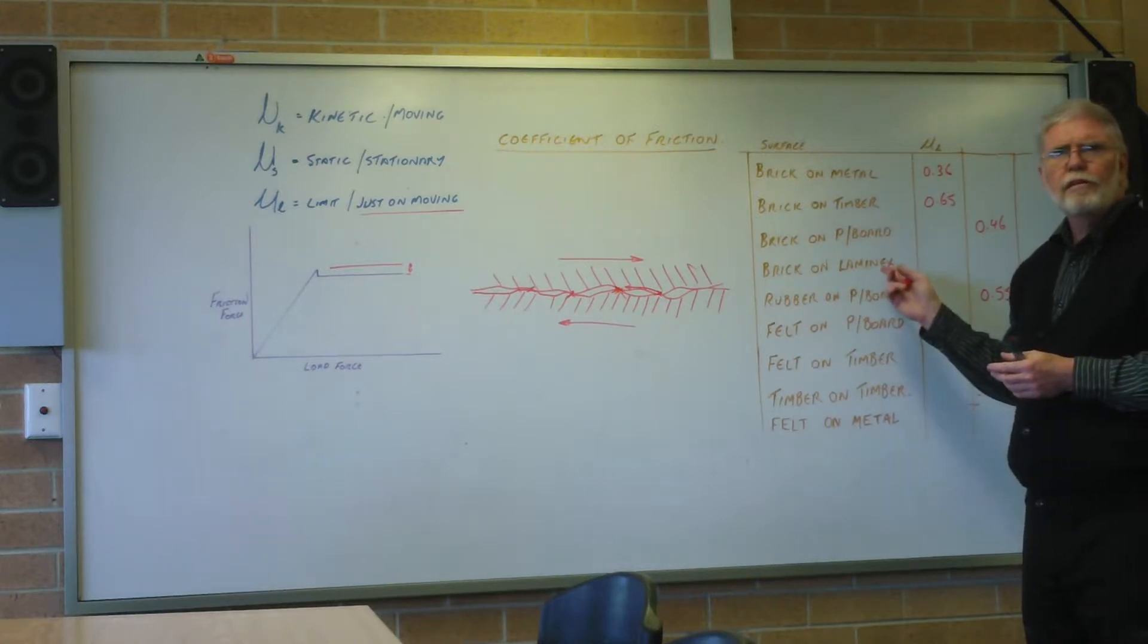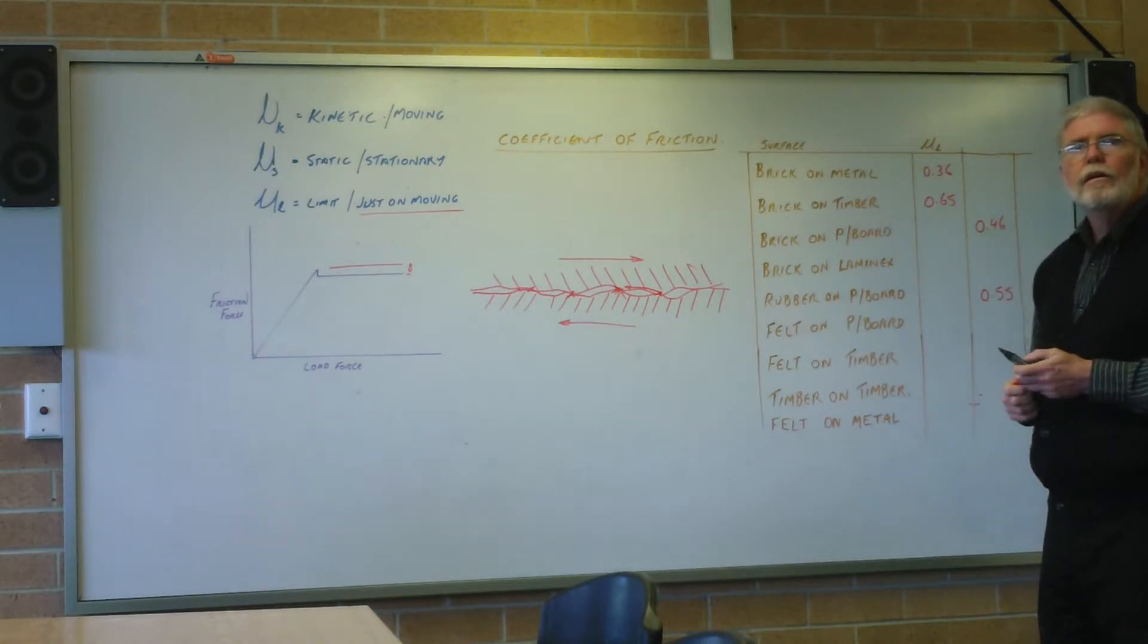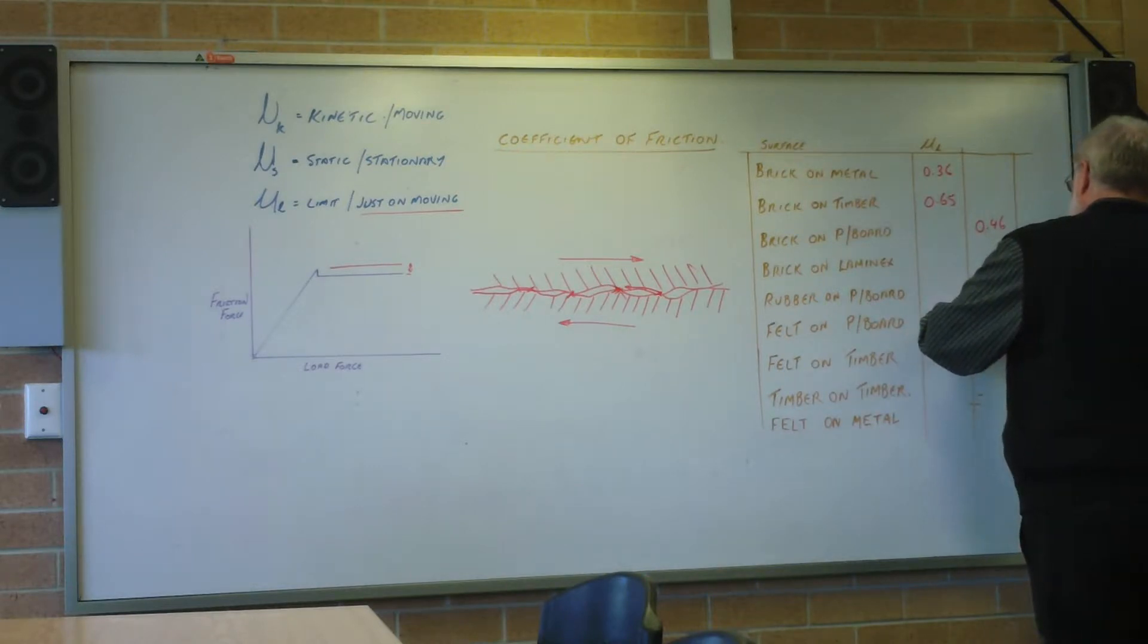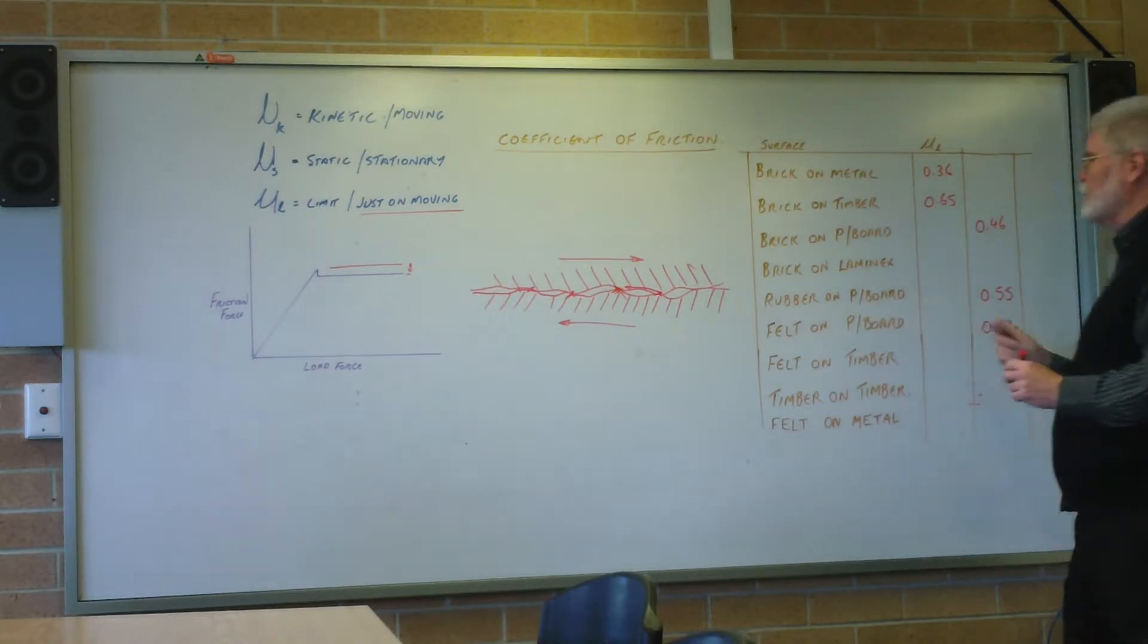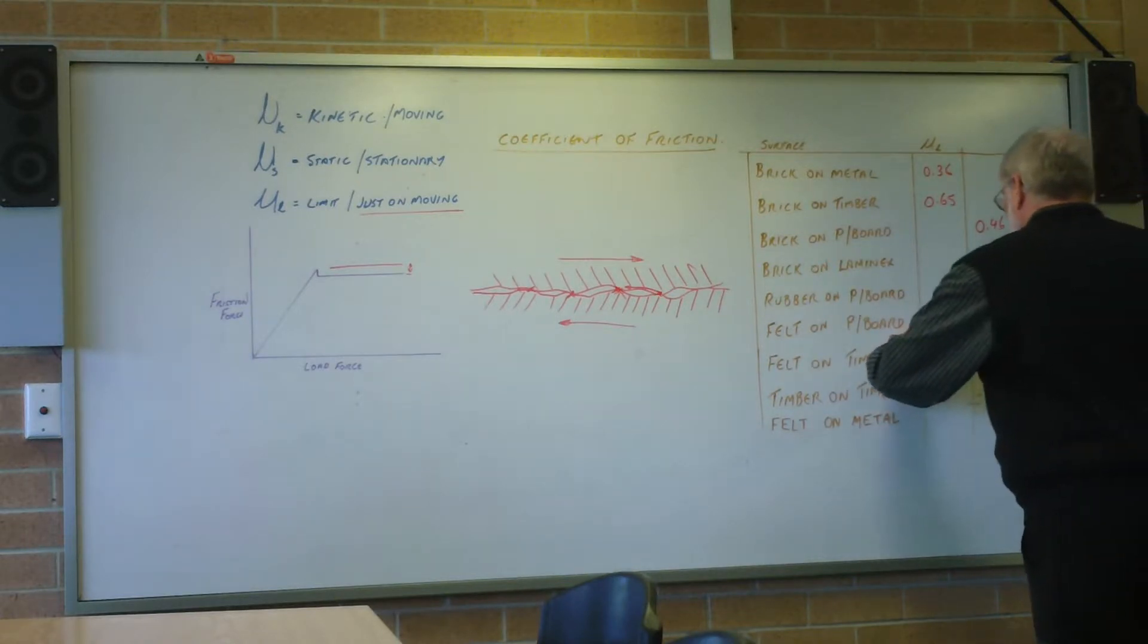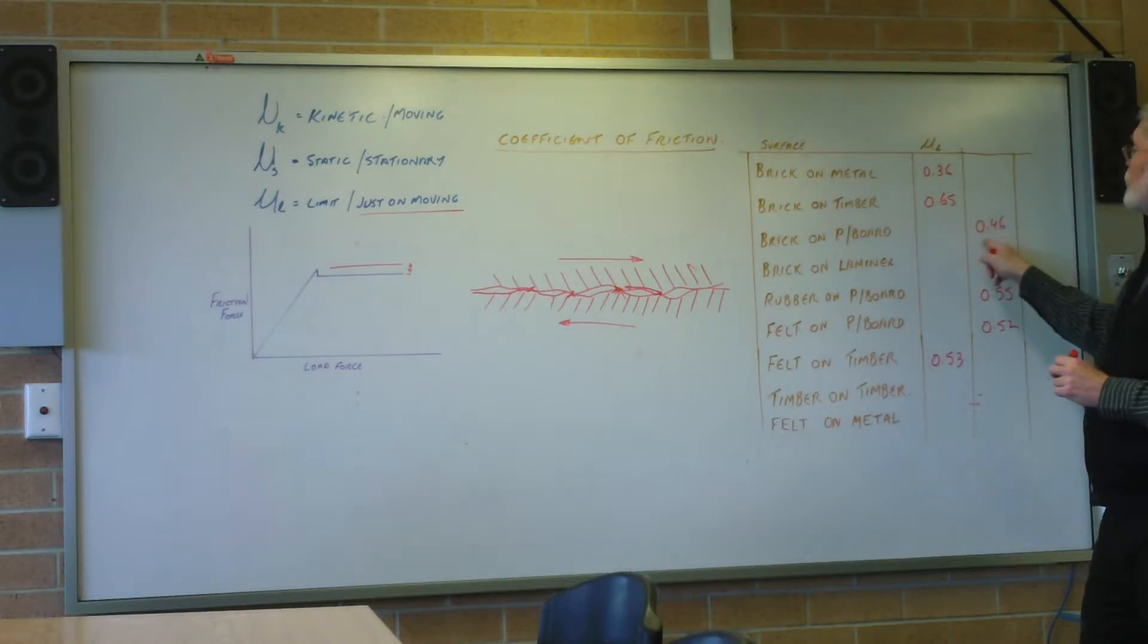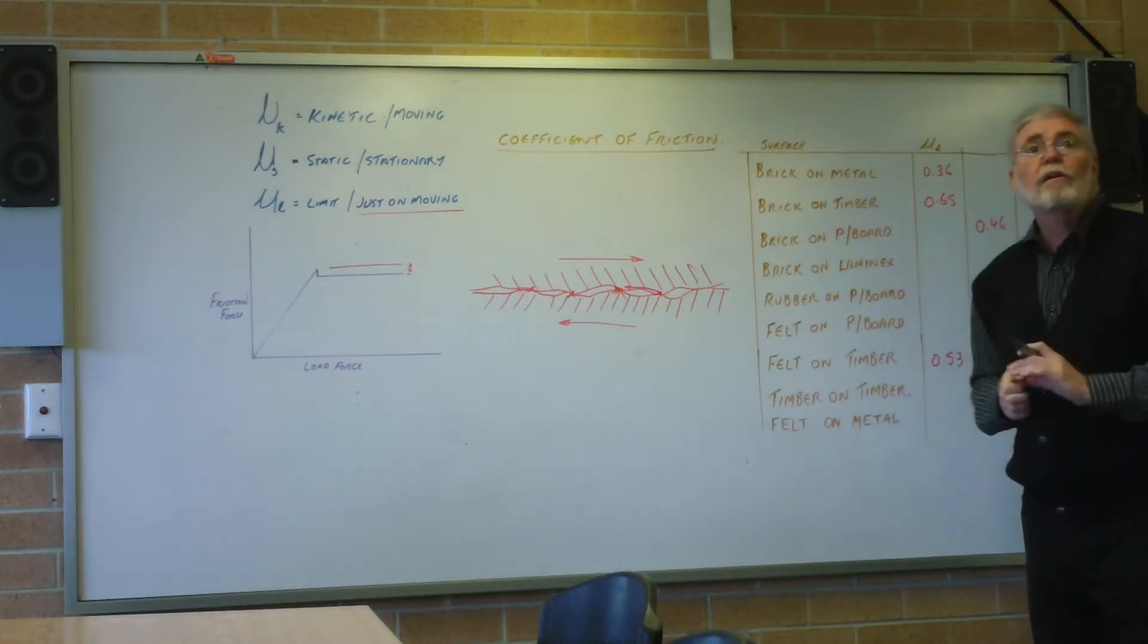Felt on particle board - somebody did that one - 0.52, slightly less than the rubber on particle board. So the rubber is a bit grippier than the felt. Felt on timber - 0.53. Interesting, the particle board here is not much different, but the brick in these two are very different.